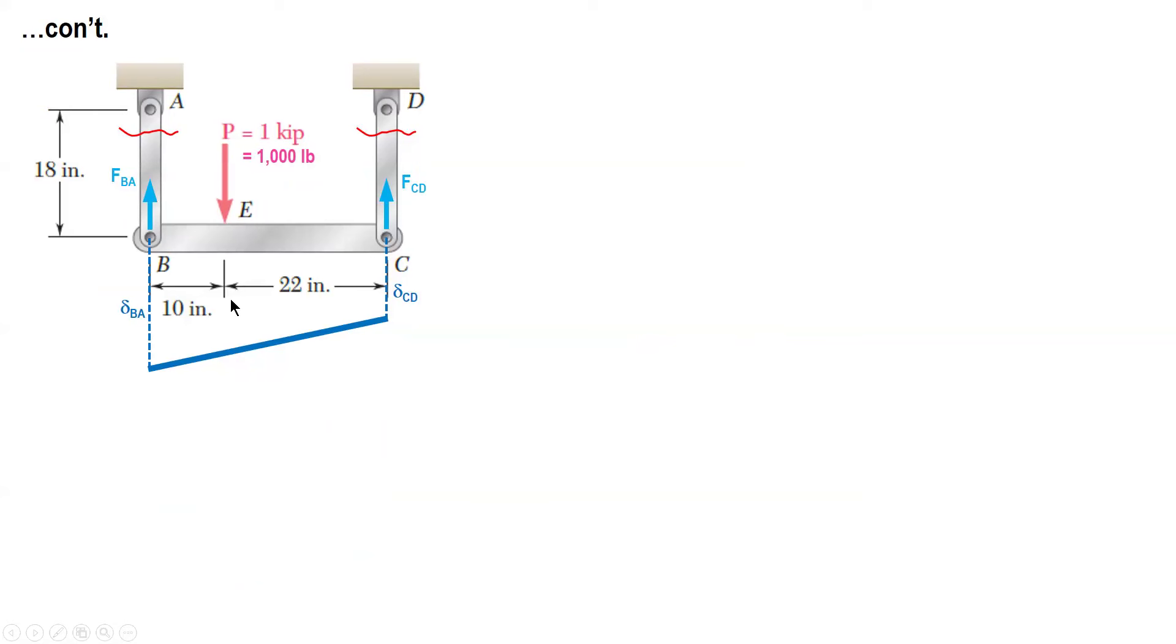So we solve for the displacement of E. Draw a horizontal line. The distance from this point up to this one is Y sub E, or displacement of E. So in order to solve Y sub E, we form a triangle so we can use ratio and proportion or similar triangles. So we are going to draw a horizontal line from this point to the left. So this distance is equal to Y sub E. This one, Y sub E minus delta CD.